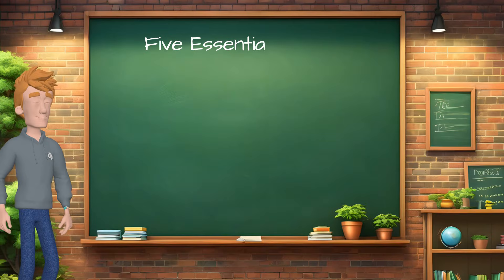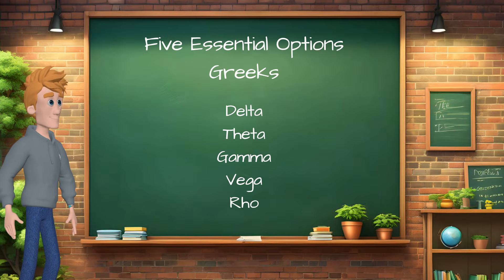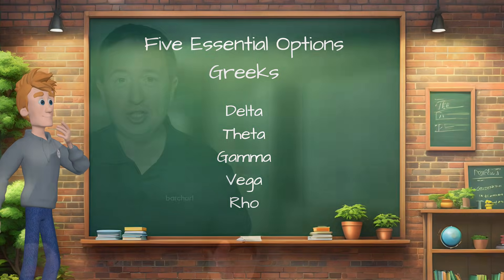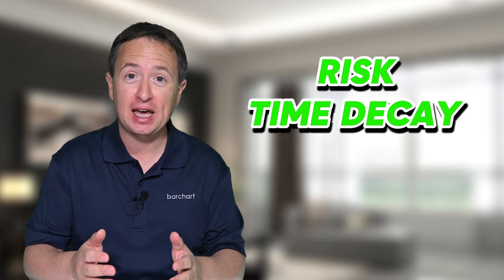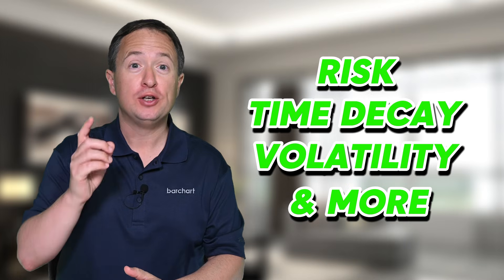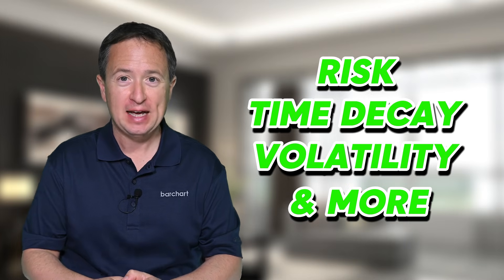In this video, I'm going to break down the five essential options Greeks — that's delta, theta, gamma, vega, and rho — and show you how each one helps you monitor risk, time decay, volatility, and more, so you can trade with confidence and precision.